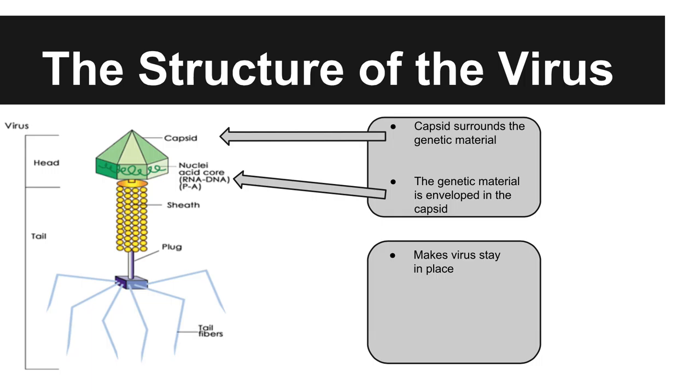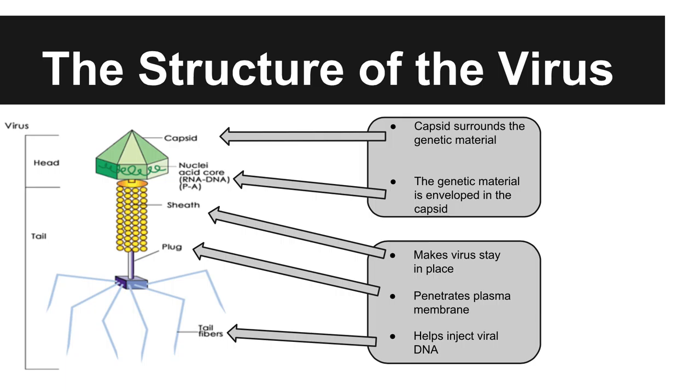The head of the virus is a structural feature that holds the capsid encased genetic material. The tail has a more functional purpose and latches onto the host cell. When the tail latches onto the host cell, the sheath becomes active and causes the virus to adhere to the host cell. By doing so, it allows the plug to penetrate the plasma membrane where the tail fibers can help inject the viral DNA.